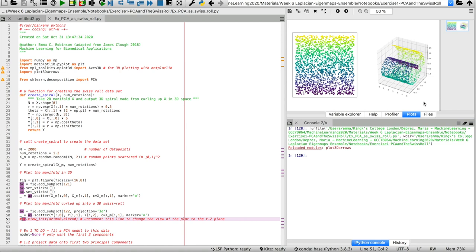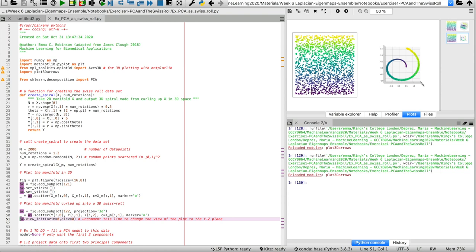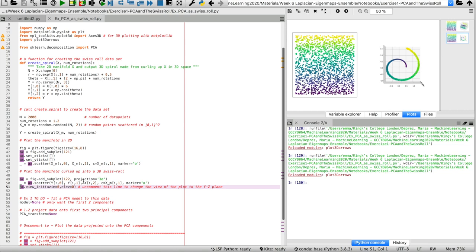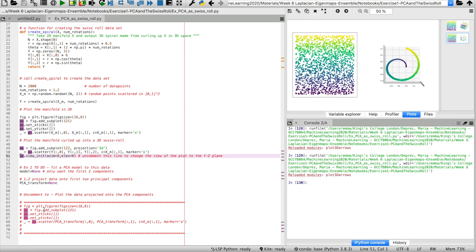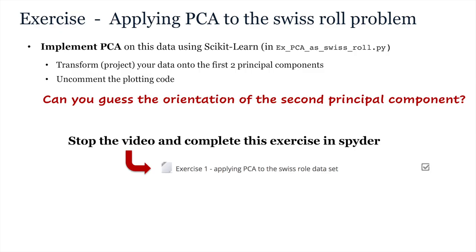You can hopefully see that it plots the Swiss roll dataset. Note, the data is designed to vary fastest along x, so I can tell you that your first PCA eigenvector will align largely with the x-direction. However, what about in the y-z axis? To view this more closely, you can rotate the plot view by uncommenting this line. So we know that PCA seeks the directions in which the data varies fastest. In what direction do you think it will be in this case? Try stopping the video and implementing PCA for this dataset using scikit-learn, specifically by changing these two lines and then uncommenting the plotting code to see the result.